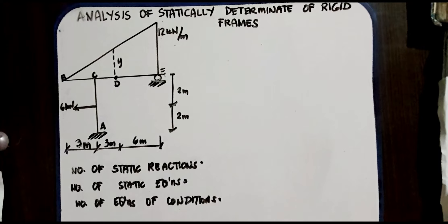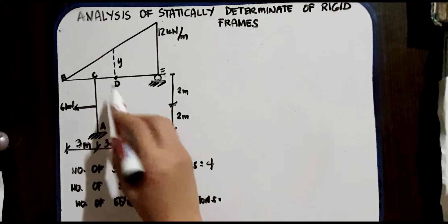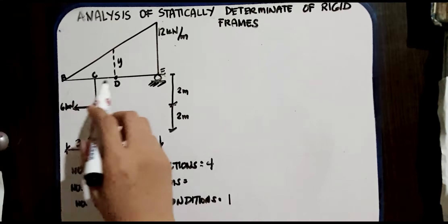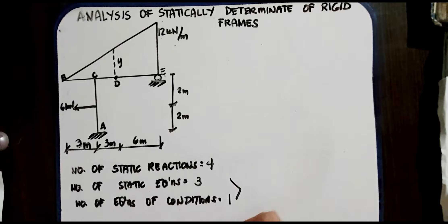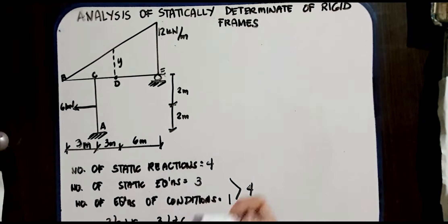First, we consider the number of static reactions. We have 3 plus 1, which is 4 reactions. We also have 1 condition and 3 static equations. So we determine if it is a determinate or indeterminate structure: 4 is equal to 4, confirming it is determinate. You can also use the formula 3B + R = 3J + C depending on how you work with the determinacy of rigid frames.